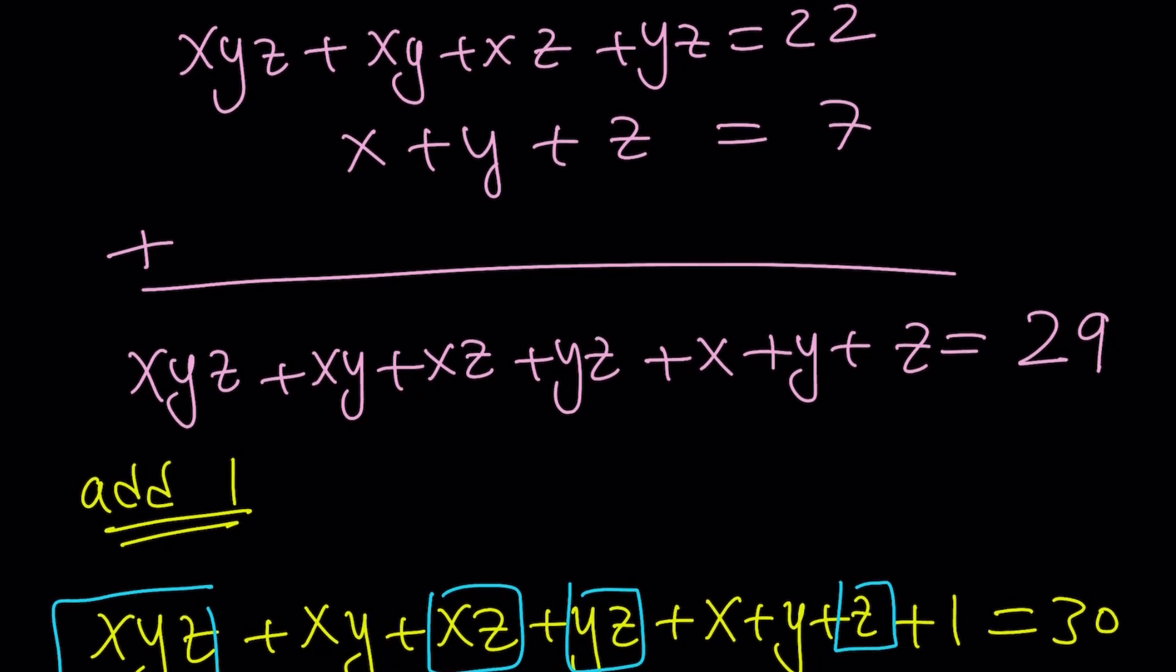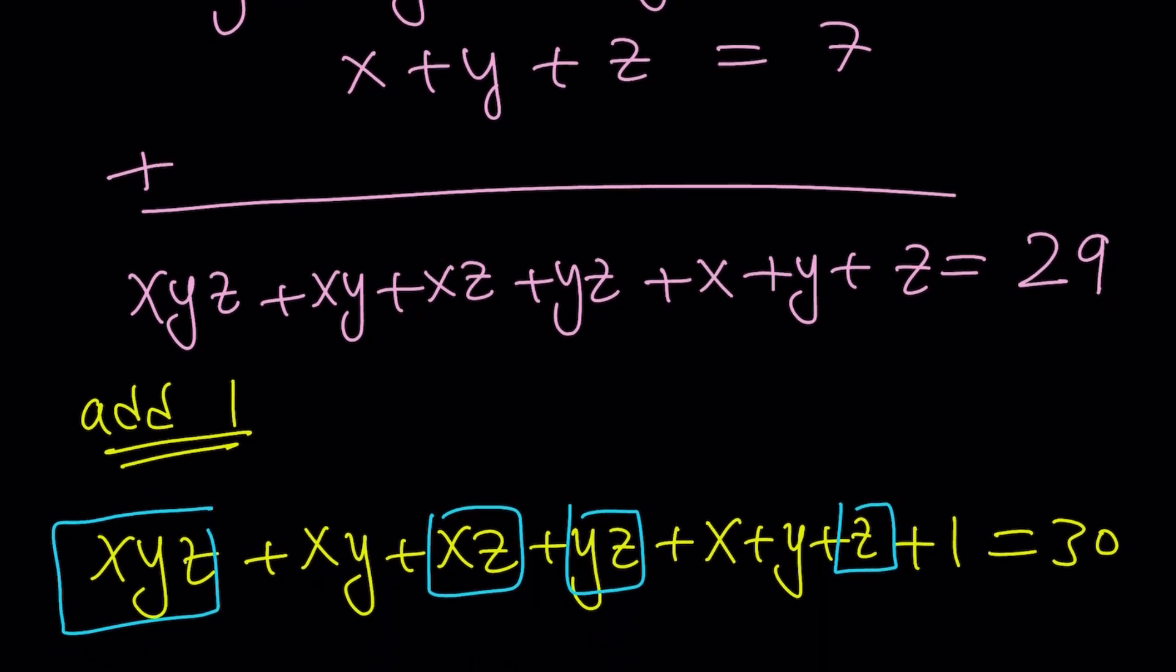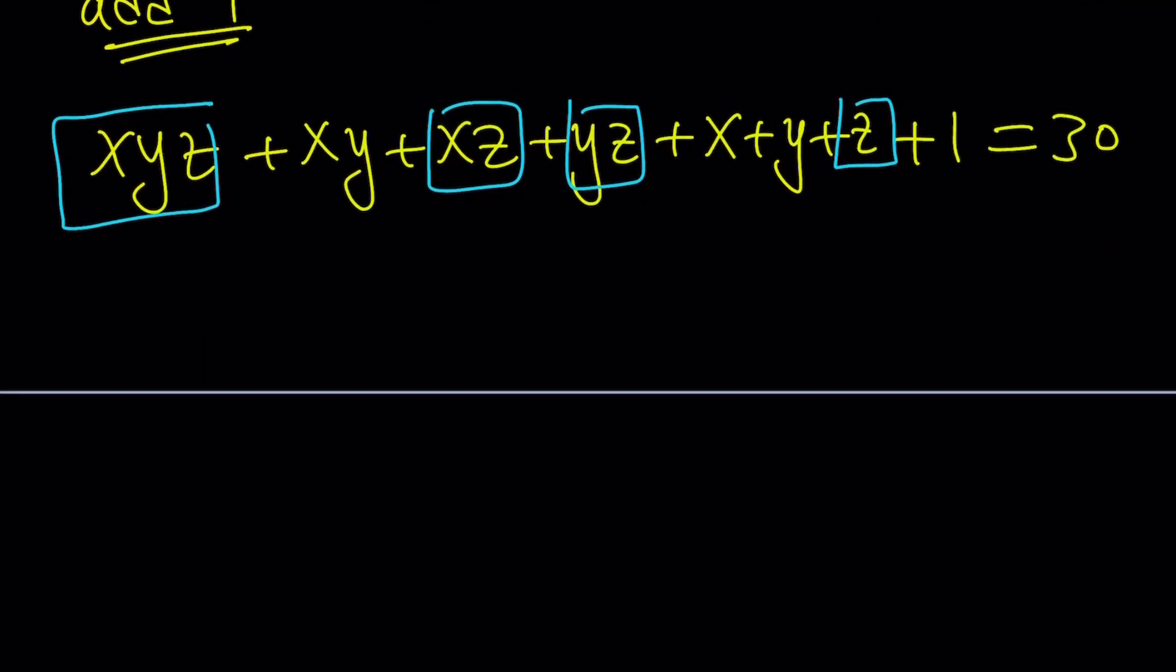So if you look at the original sum, then we have seven terms. So when you have seven terms, that's another motivation for adding something to both sides because you don't want to have seven terms. You don't want to have an odd number of terms because you can't really group them.